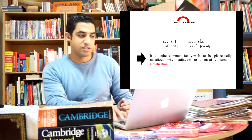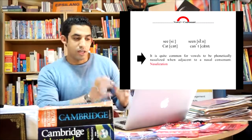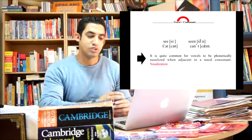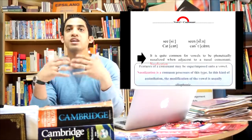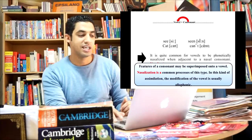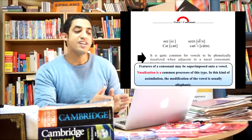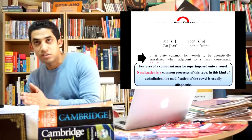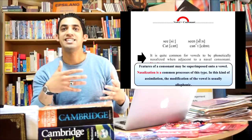Another common process of assimilation is when a vowel assimilates a consonant or takes the feature of a consonant. And here we can mention the example of nasalization. What is nasalization? Nasalization refers to when a feature of a consonant may be superimposed into a vowel. In this type, this kind of assimilation, the modification of the vowel is usually allophonic. The nasal consonant affects the vowel and it makes it nasalized. You can take the example of see, seen, cat, can't. It is quite common for vowels to be phonetically nasalized when adjacent to a nasal consonant. Whenever a vowel is adjacent to another nasal consonant, it gets nasalized. Can, and, seen, damn, etc.